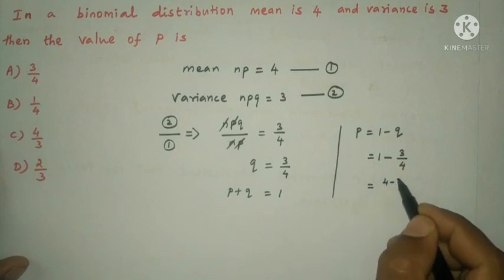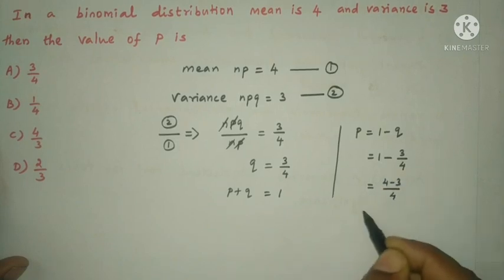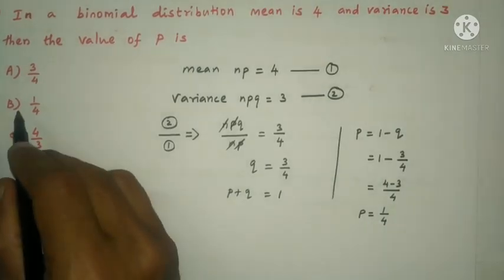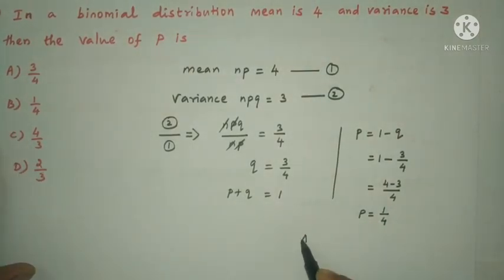4 minus 3 by 4, therefore the p is 1 by 4. The option B is the correct answer. Therefore, the answer is option B, the answer is 1 by 4.